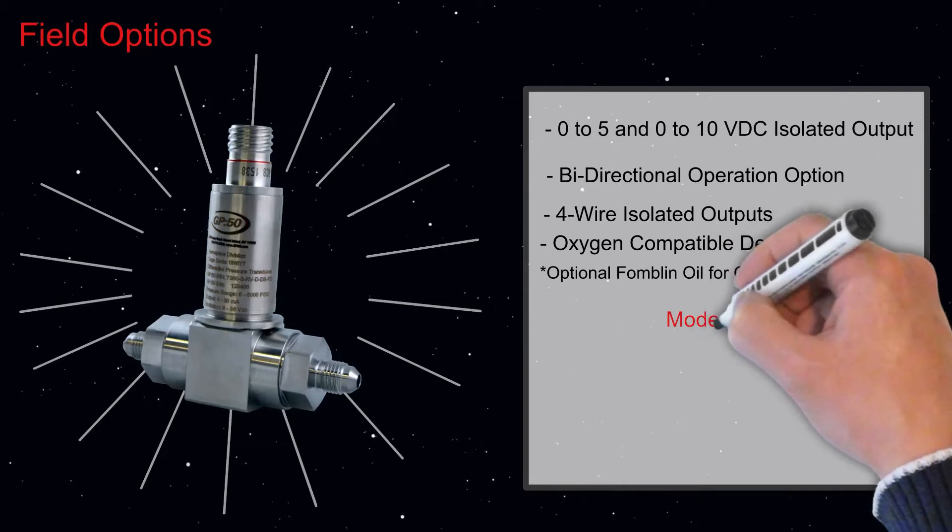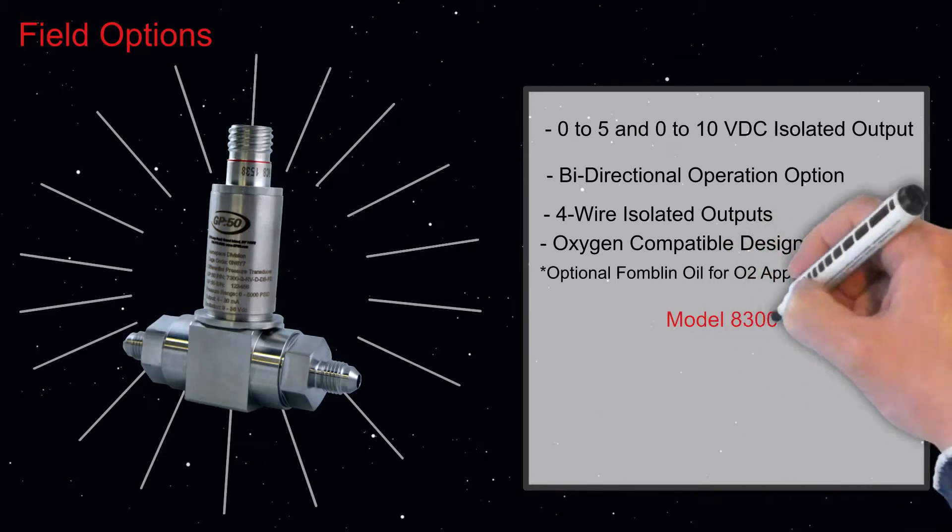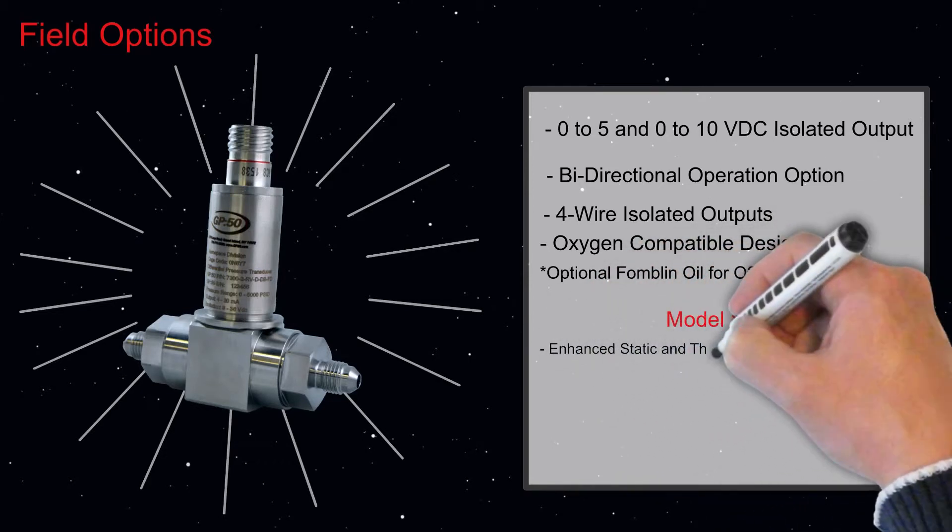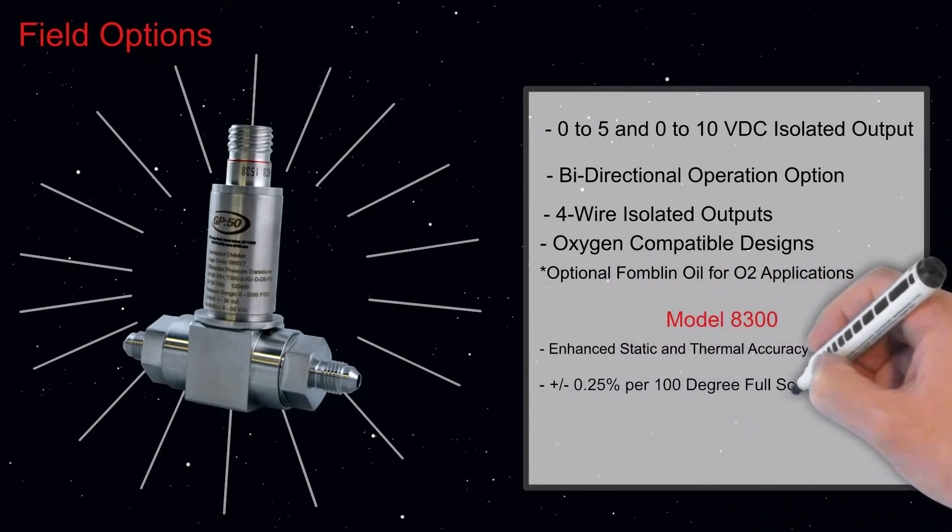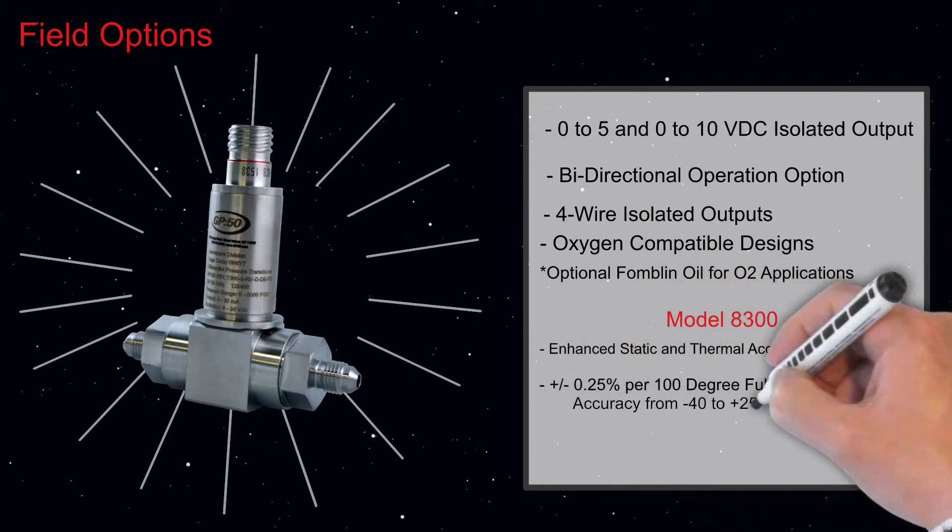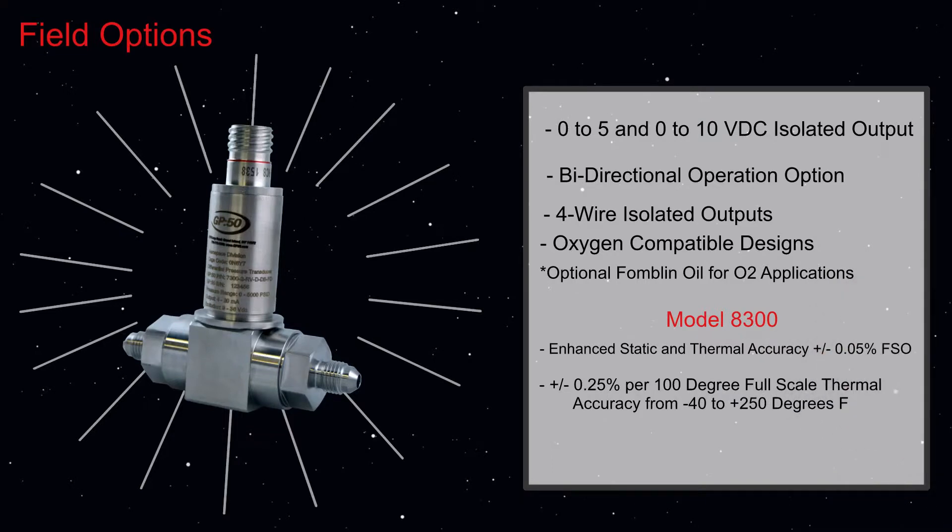The 8300 series offers improved static and thermal accuracy to plus or minus 0.05% full-scale output, with a plus or minus 0.25% per 100 degrees Fahrenheit full-scale thermal accuracy from minus 40 to plus 250 degrees Fahrenheit.